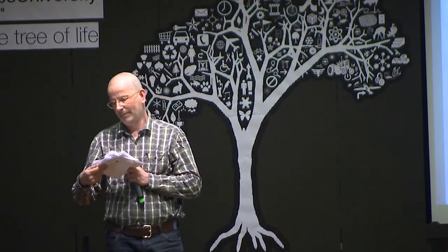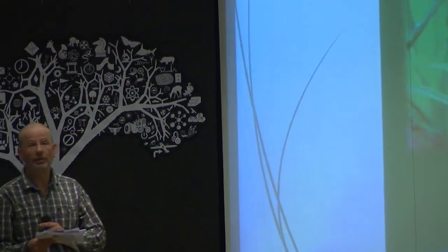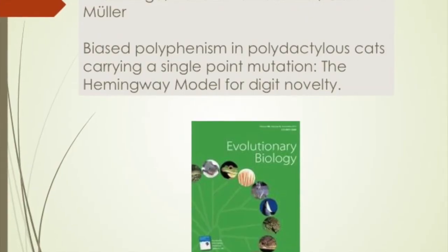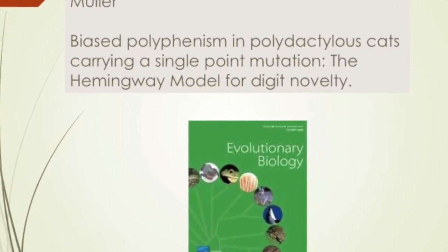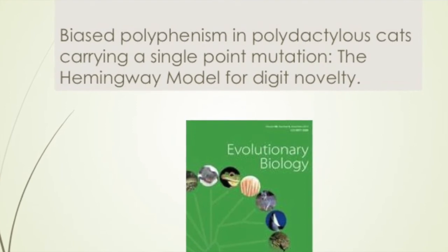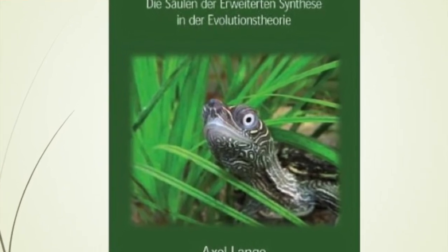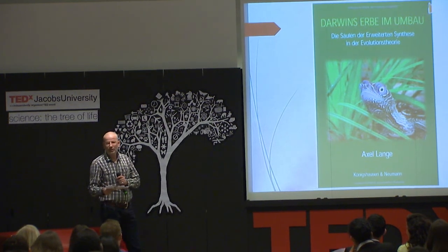The subject I was talking about today was published last December in the journal Evolutionary Biology by Springer New York. The title of the paper is 'Biased Polyphenism in Polydactylous Cats Carrying a Single Point Mutation: The Hemingway Model for Digit Novelty.' To those who want to know more about the extended evolutionary theory, I recommend my book, Darwin's Inheritage Rebuilt. With Darwin's Inheritage I don't mean Darwin himself — I mean the evolutionary synthesis. Darwin knew more than we all believe, but the evolutionary synthesis was struck together. The book is in German language. Thank you for your attention.